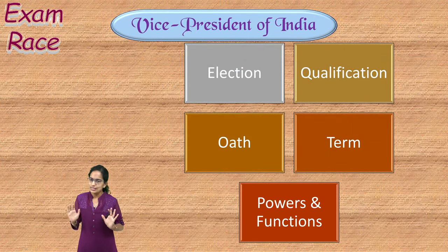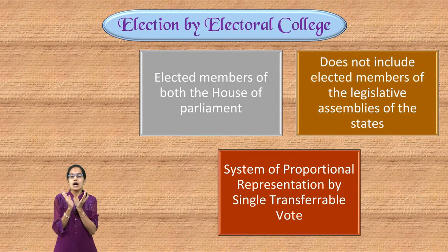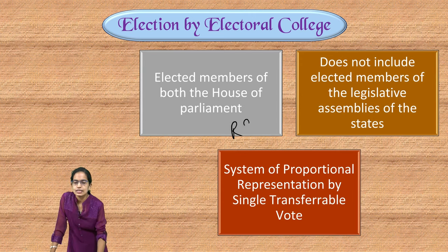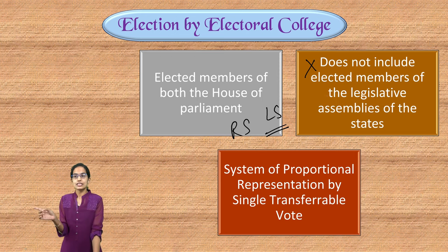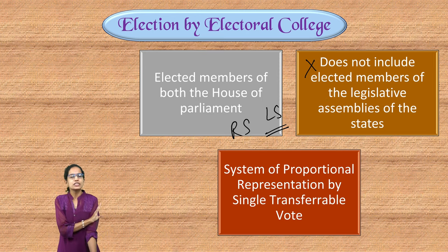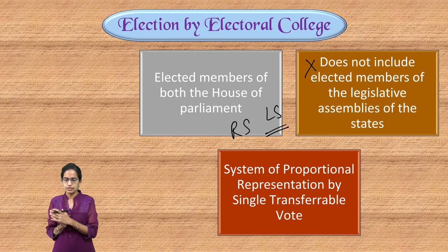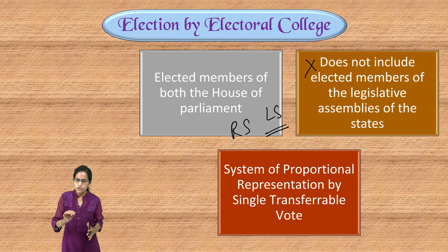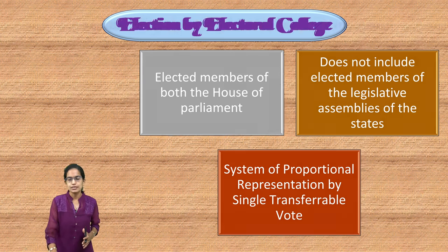The Vice President of India is also known as the second citizen. We will understand the process of election, qualifications, terms, powers, and functions of the vice president. The vice president is elected by members of both houses of parliament — Rajya Sabha and Lok Sabha. Note: elected members of state legislative assemblies do not take part in the election of the vice president. The election uses the system of proportional representation by single transferable vote, conducted by secret ballot.